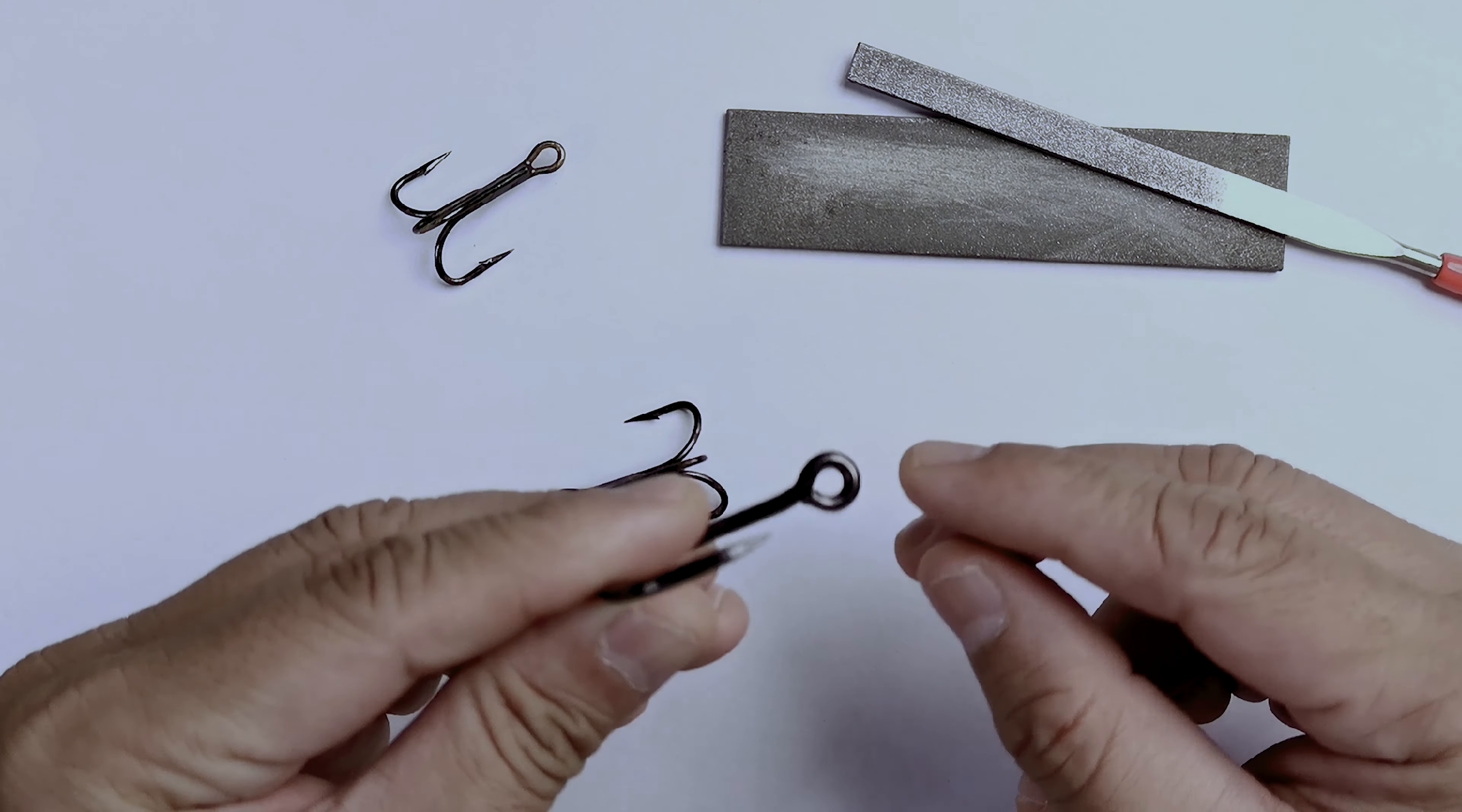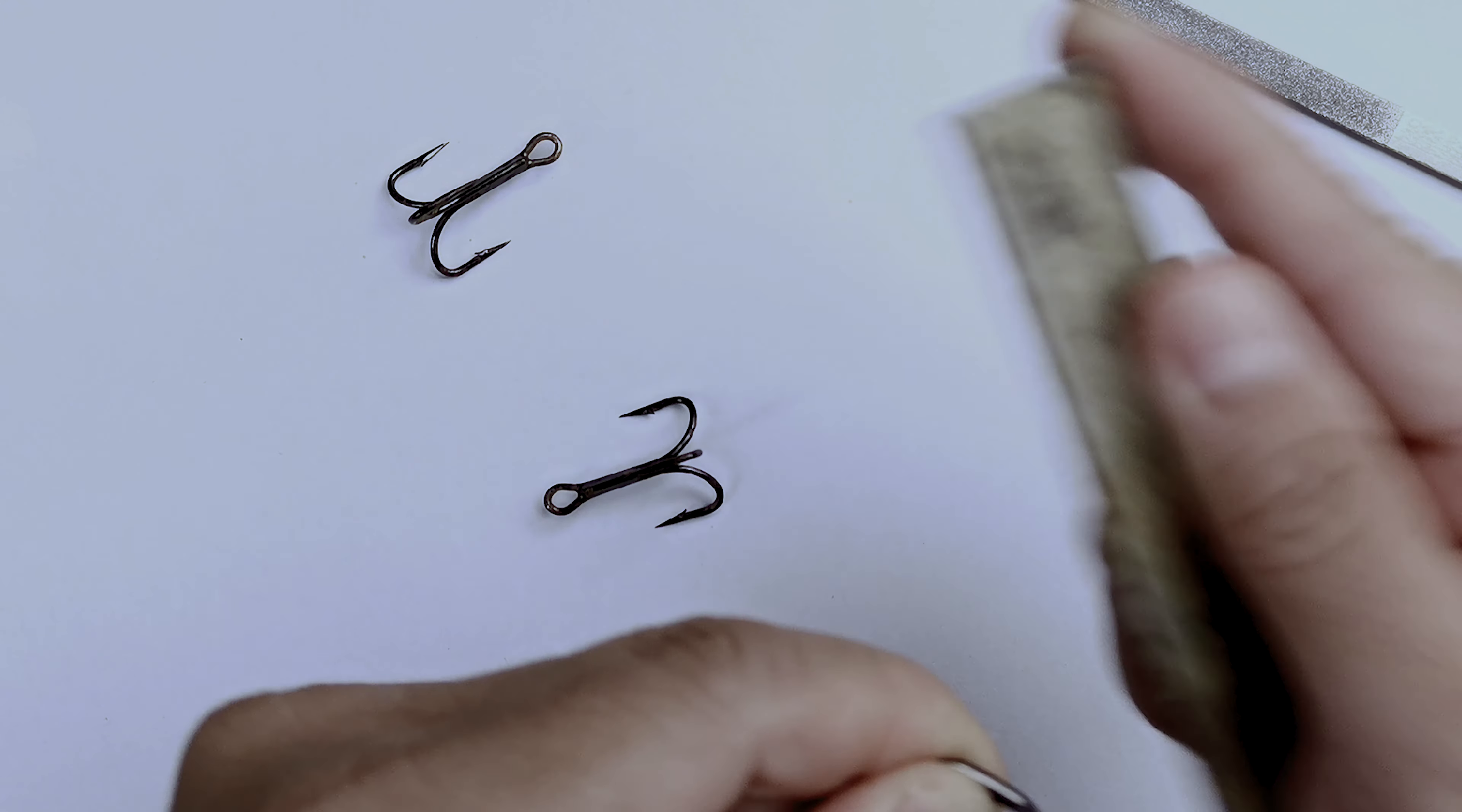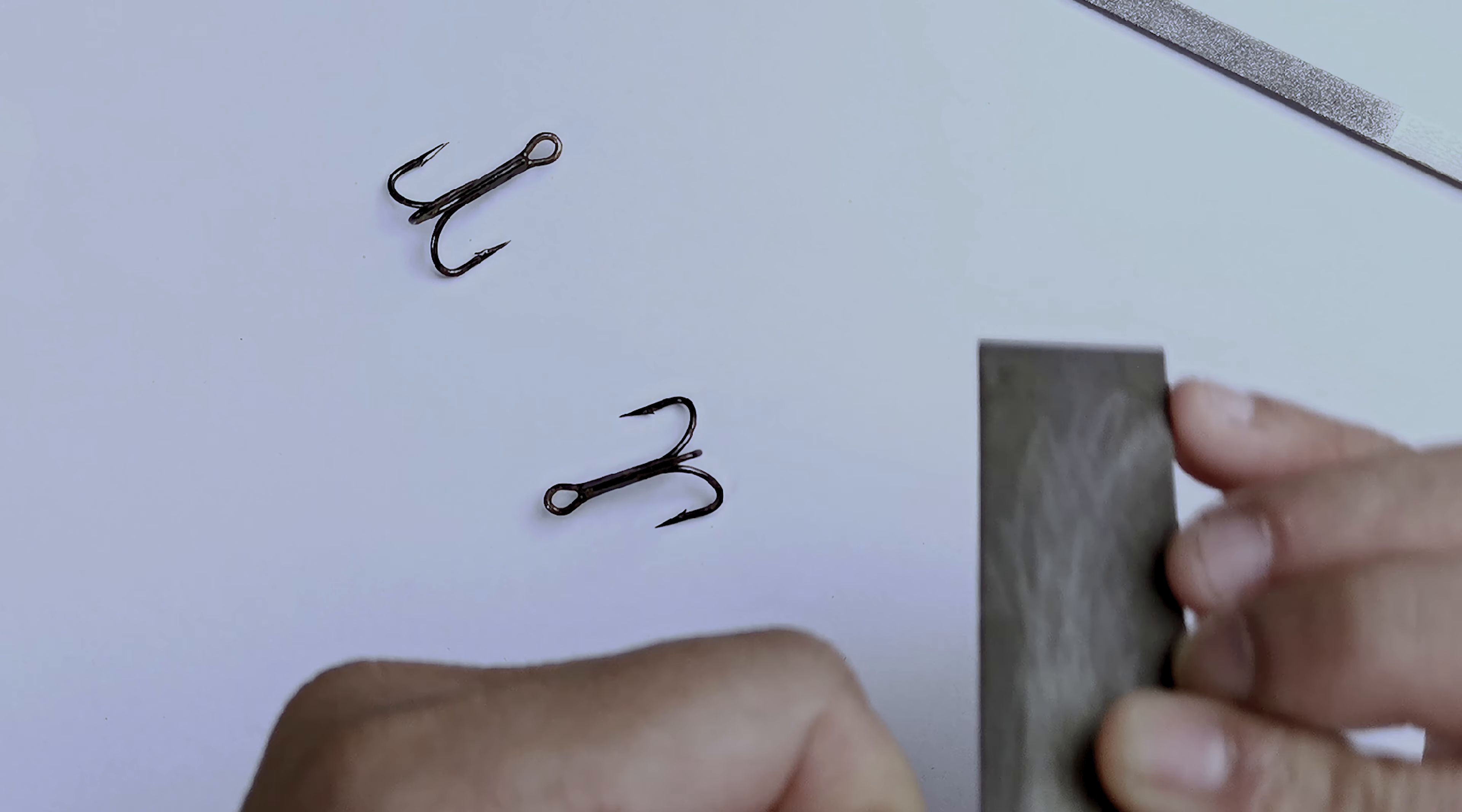Now, single hooks are pretty much very straightforward to sharpen. All you have to do is just run the file like so, okay? And first, you take off the burr like so. And the hook, actually, if you look closely, you'll see that there are flat sides. And all you have to do is just follow that. If it's a conical point, then it's even easier because all you have to do is just basically just go around like that.